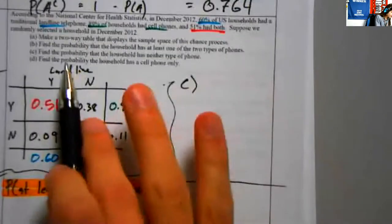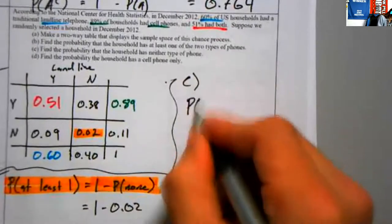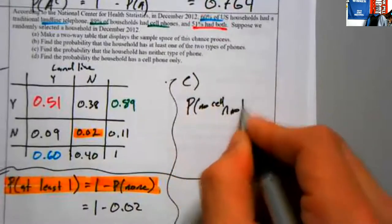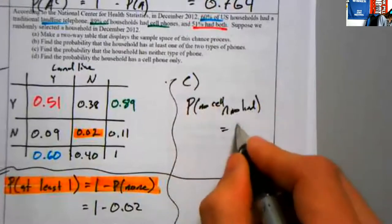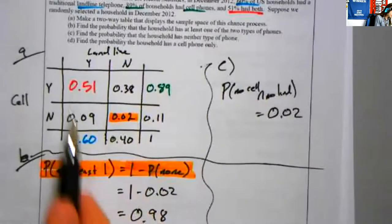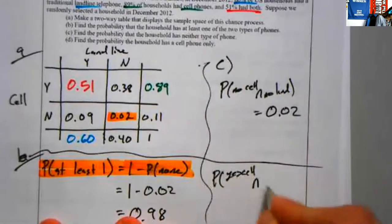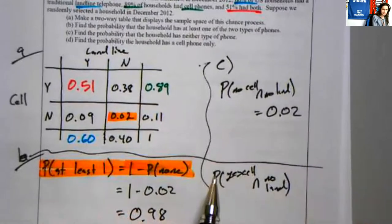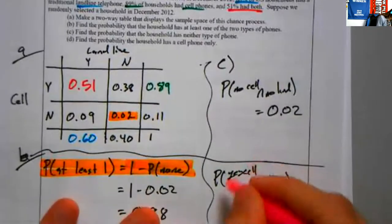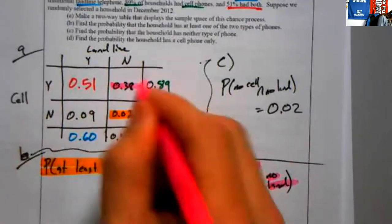Part C: what's the probability they have neither type of phone? That's P(no cell and no land) — we already found that: 0.02. Part D: find the probability they have a cell phone only. That would be P(yes cell and no land) — who had a cell phone but not a landline? That's 0.38.